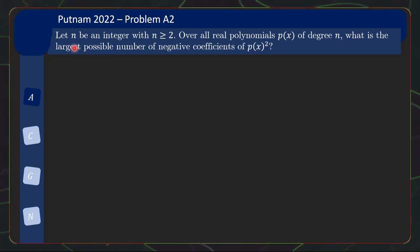But let's take a look at the problem statement. So we have: Let n be an integer with n greater than or equal to 2. Among all real polynomials P(x) of degree n, what is the largest possible number of negative coefficients of P(x)²? Not a sophisticated problem statement, it's very short and sharp.